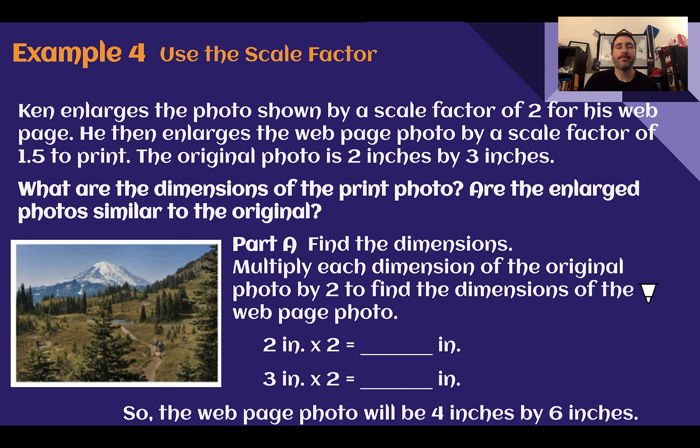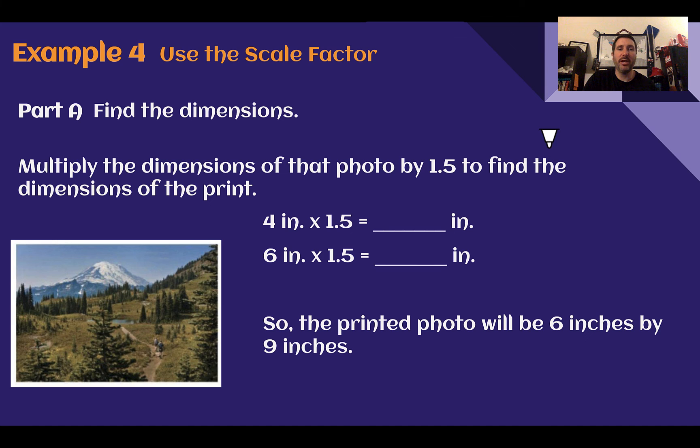Example 4, use the scale factor. Ken enlarges the photo shown by a scale factor of 2 for his webpage. He then enlarges the webpage photo by a scale factor of 1.5 to print. The original photo is 2 inches by 3 inches. What are the dimensions of the print photo? Part A, let's find the dimensions. We're going to start by going to the webpage one. It says we multiplied by a scale factor of 2, so let's multiply each of the dimensions by 2. If it originally was 2 by 3, now it's going to be 4 by 6. Now that we have our new 4 by 6 photo from the webpage, we need to multiply that by 1.5 for our print image. So 4 times 1.5 would be 6. 6 times 1.5 would be 9. Our final photo print will be 6 inches by 9 inches.